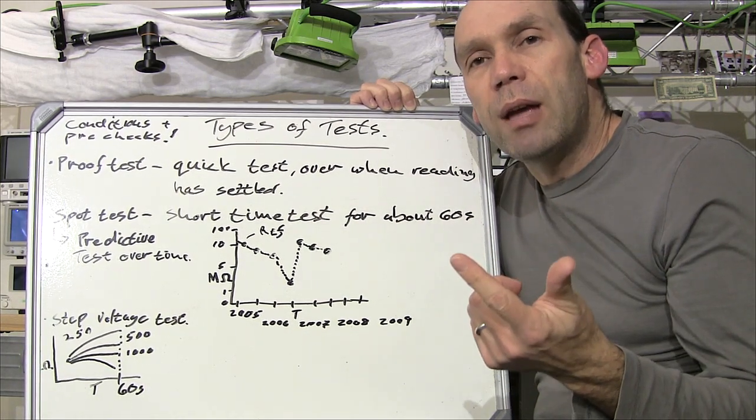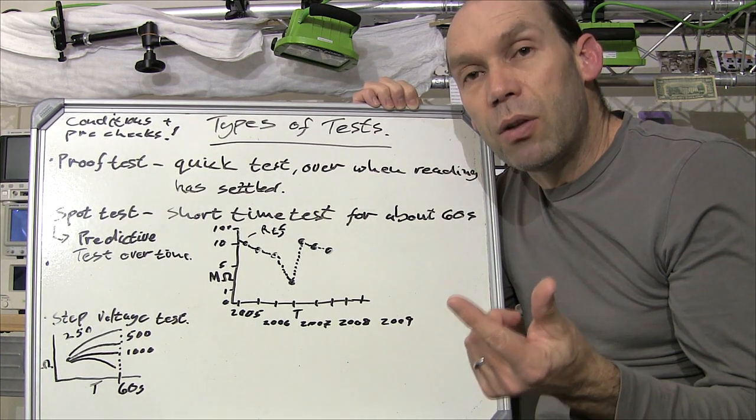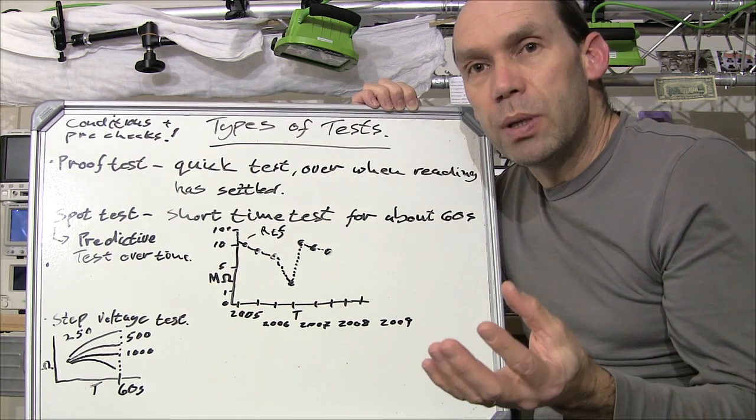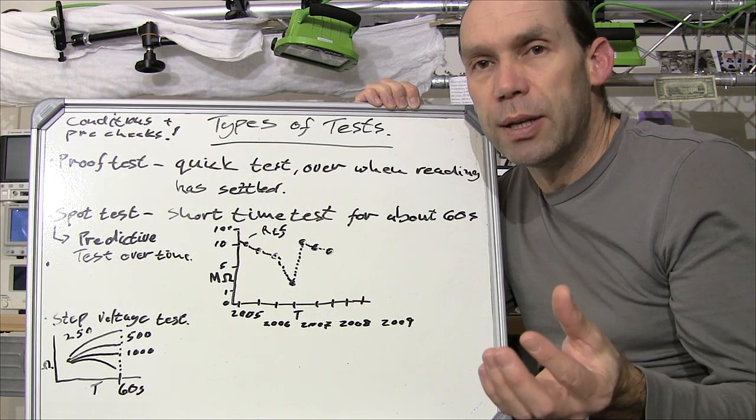Both of those can affect the outcome of the reading because both can have an effect on the resistance. Obviously in your pre-checks you want to go through and check that your equipment is operating properly and that you've gone through all the safety requirements that you need to.